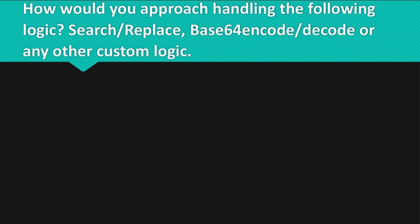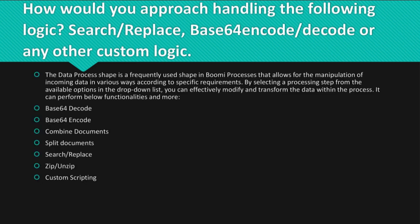Question: How would you approach handling the following logic — search/replace, base64 encode/decode, or any other custom logic? The Data Process shape is a frequently used shape in Boomi processes that allows for the manipulation of incoming data in various ways according to specific requirements. By selecting a processing step from the available options in the drop-down list, you can effectively modify and transform the data within the process.